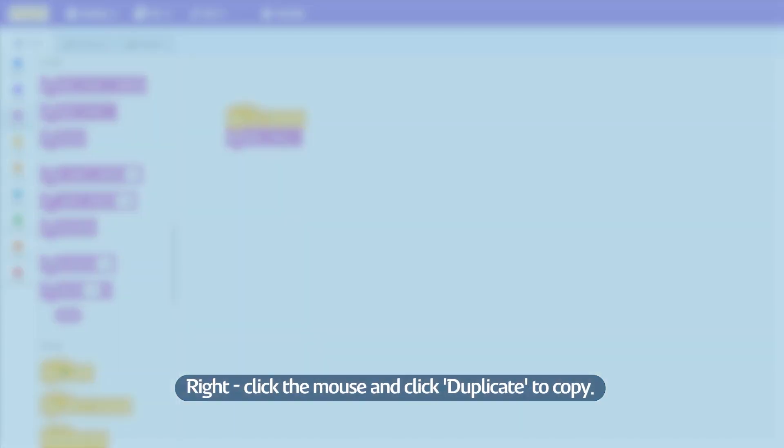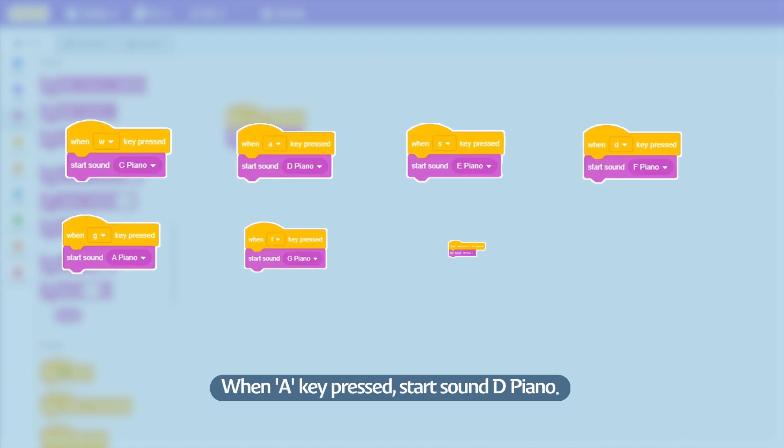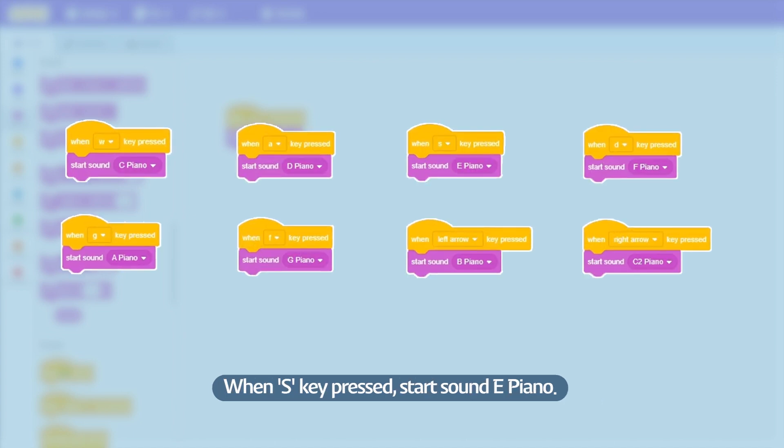Right-click the mouse and click Duplicate to copy. When E key pressed, Start Sound D Piano. When S key pressed, Start Sound E Piano. When D key pressed, Start Sound F Piano. When F key pressed, Start Sound G Piano. When G key pressed, Start Sound A Piano. When right arrow key pressed, Start Sound B Piano. When left arrow key pressed, Start Sound C2 Piano.